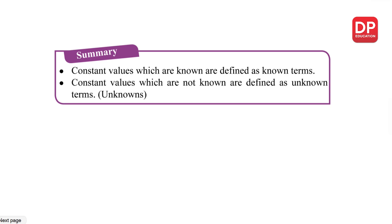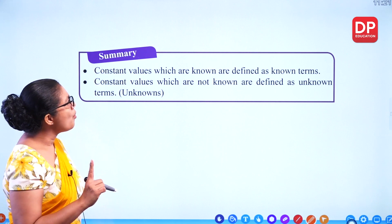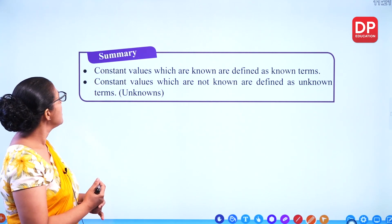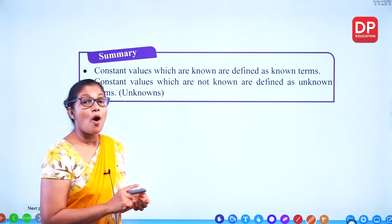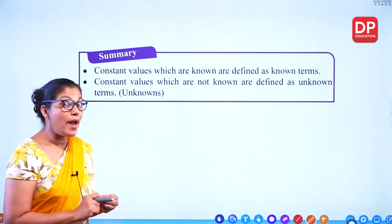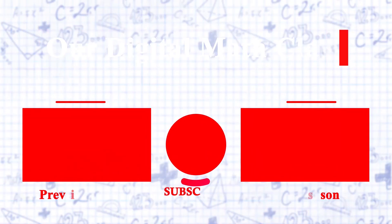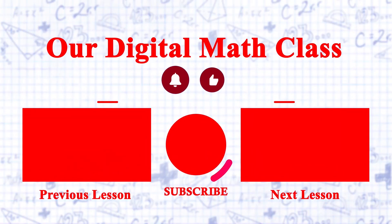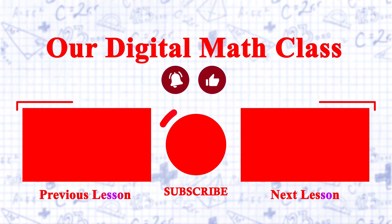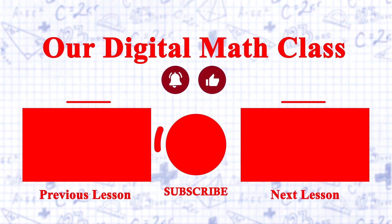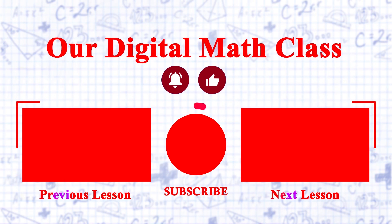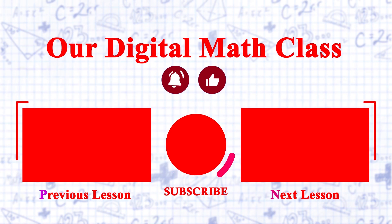So in this lesson we discussed what are variables, known and unknown terms. Now you know how to identify a variable and a constant.